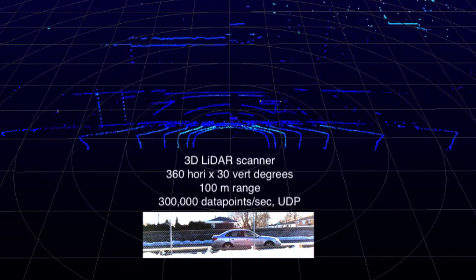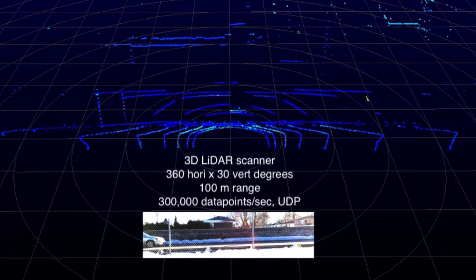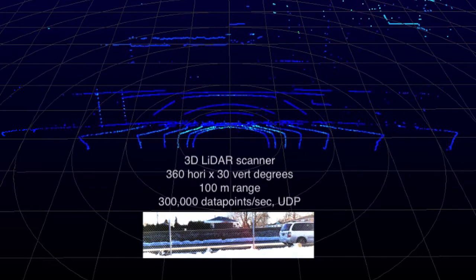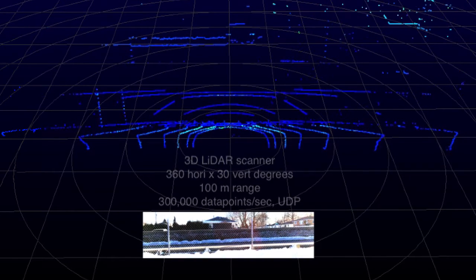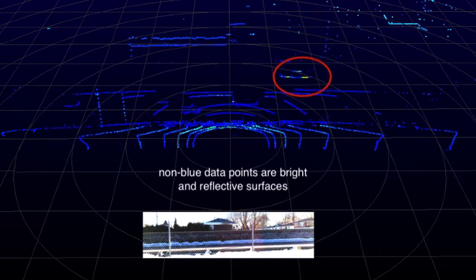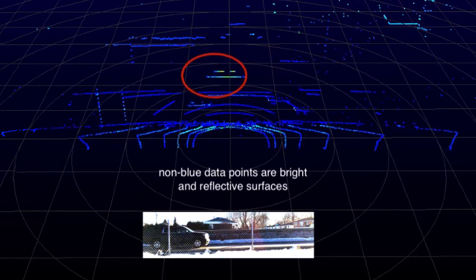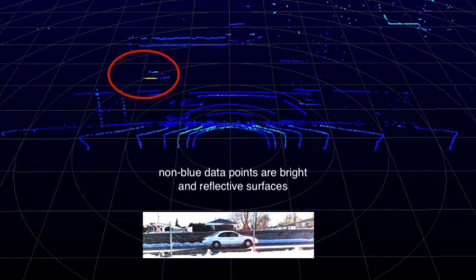Noisy data points in the upper right hand corner are individual beams dazzled by the sun. This is normal behavior from any laser measurement device and is filtered by external software. Data points that are not blue are reflective or very light in color.